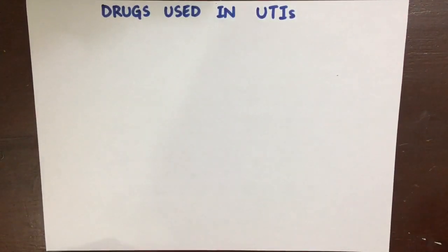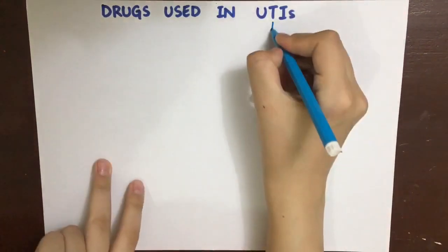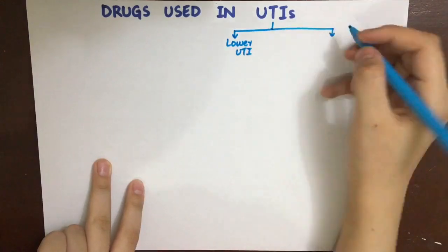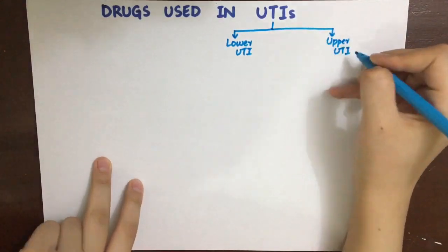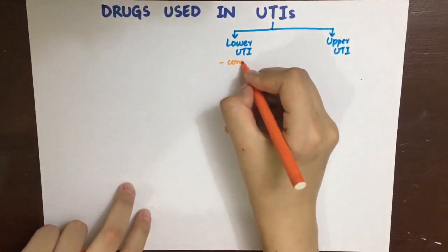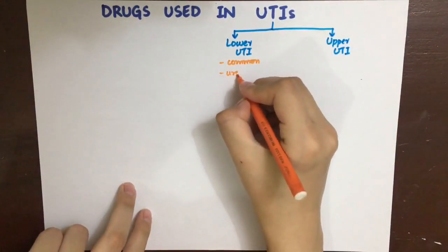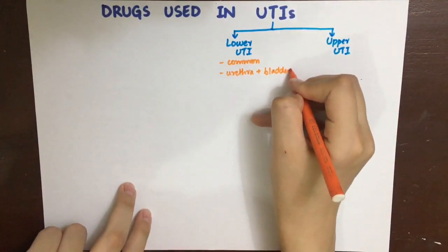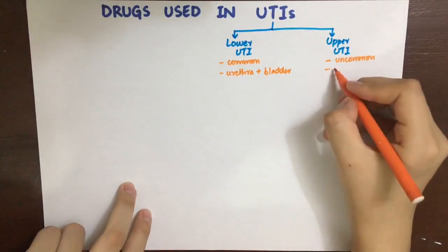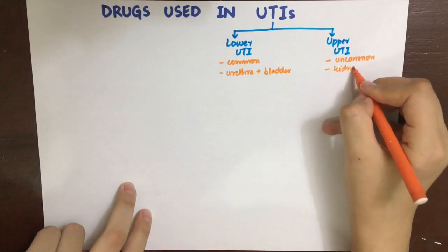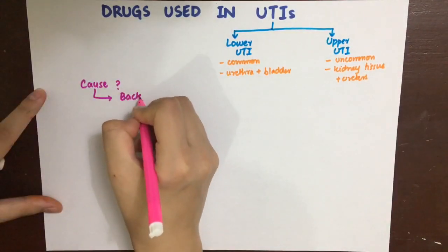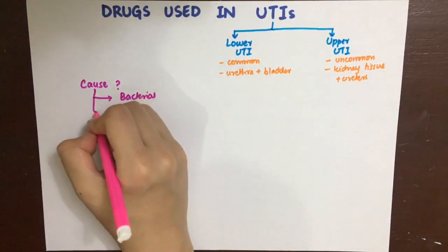Urinary tract infections can be of two types: lower UTIs and upper UTIs. The lower form is more common and mainly affects the urethra and the bladder, while the upper UTIs are less common and involve the kidney tissue — that is pyelonephritis — and also the ureters.